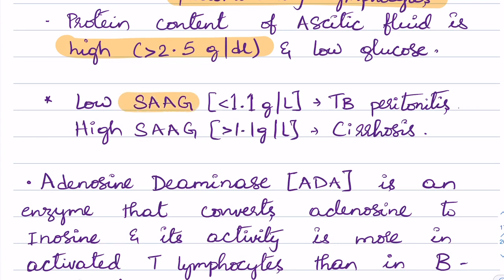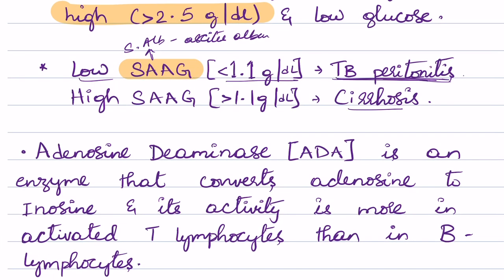Now let's discuss SAAG — the serum ascitic albumin gradient. The formula for SAAG is serum albumin minus ascitic albumin. If the SAAG is more than 1.1 grams per deciliter, it is called high SAAG; if it is less than 1.1 grams per deciliter, it is called low SAAG.